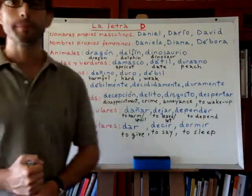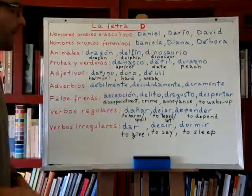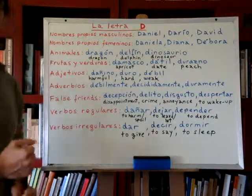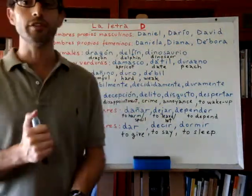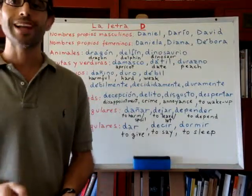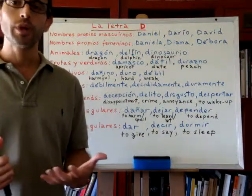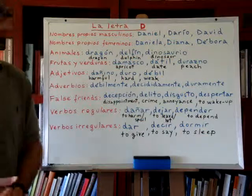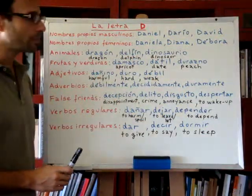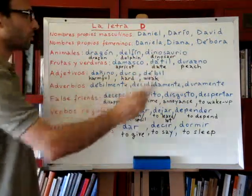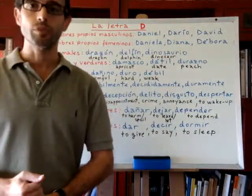Now we will see names of animals that begin with the letter D. We have el dragón. Dragón is a fictitious animal, but we have the Komodo dragon in Australia. We have el delfín — the dolphin. And we have el dinosaurio, which is already extinct.